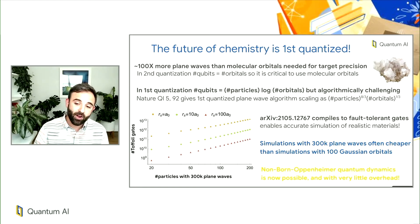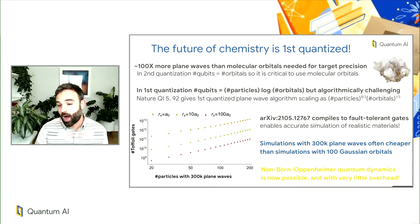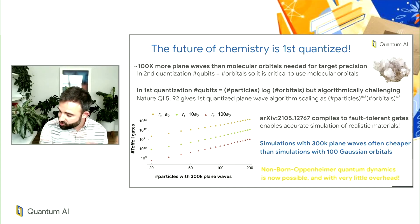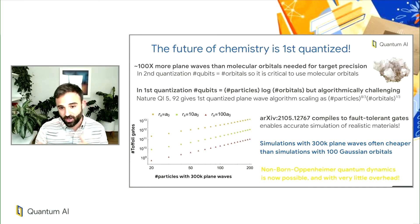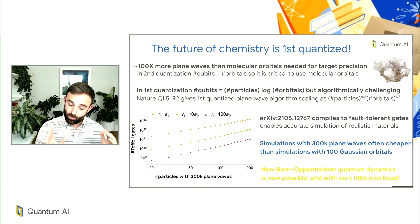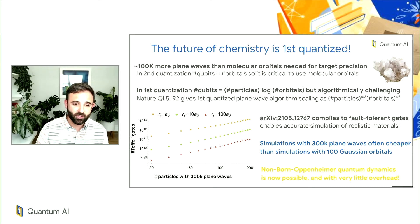The part I'm most excited about is that this representation opens up the possibility of performing non-Born-Oppenheimer quantum dynamics — full simulations of both the nuclei and the electrons evolving in time. You can't do that with molecular orbitals because they derive their advantage from being centered on nuclei; if the nuclei are moving, the molecular orbitals don't make sense. And you can't do plane wave simulations in second quantization without enough resolution. But you can do that in first quantization.